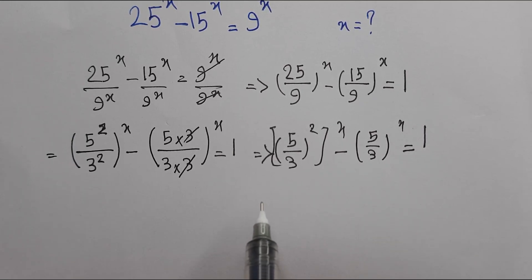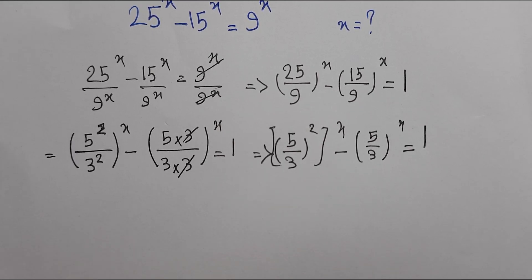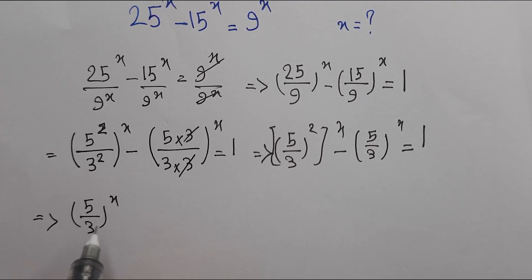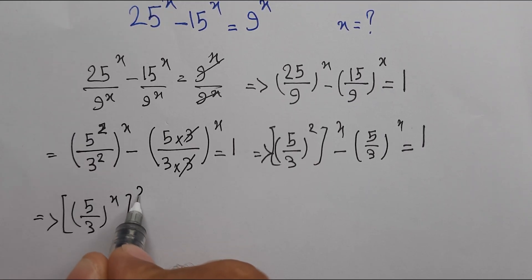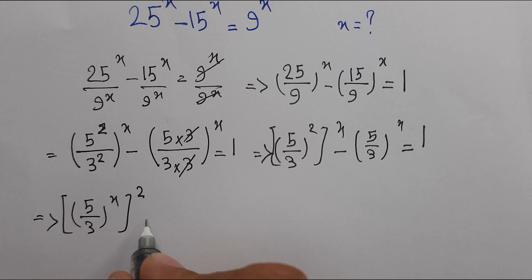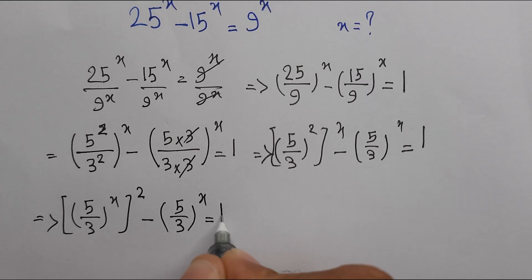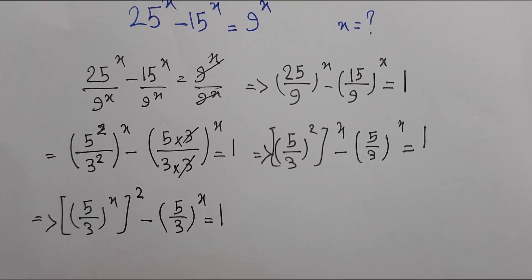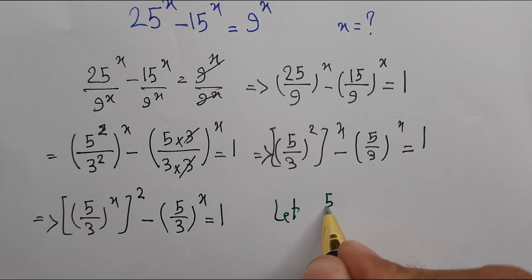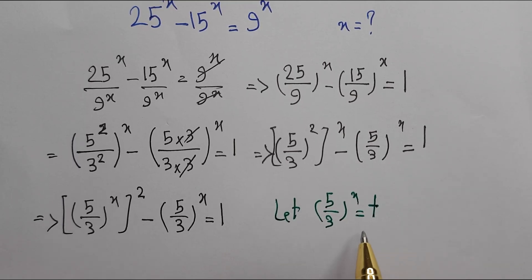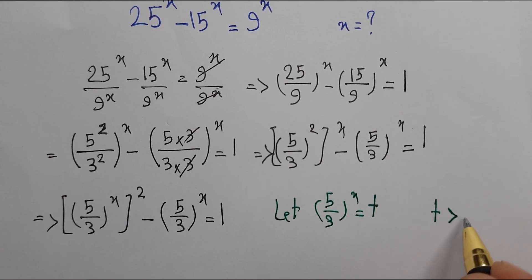We have the same base here, so we can rewrite (5/3)^(2x) as [(5/3)^x]^2. Let t = (5/3)^x, where x is a real number, so t is greater than 0.